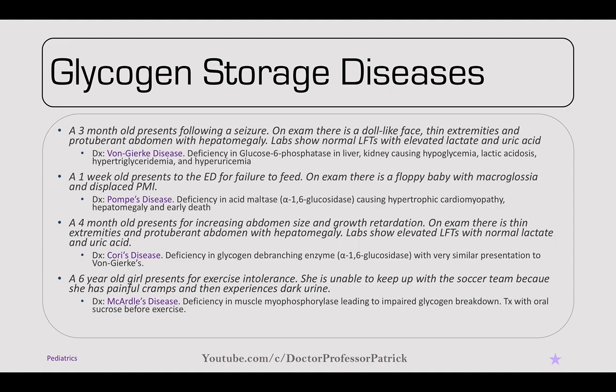A one-week-old presents to the ED for failure to feed. On exam, there's a floppy baby with macroglossia and a displaced PMI — diagnostic of Pompe's disease. It's a deficiency in acid maltase, or alpha-1,4 glucosidase, which causes hypertrophic cardiomyopathy, hepatomegaly, and early death. The common mnemonic is 'Pompe's trashes the pump' — look for heart failure with a glycogen storage disease differential.